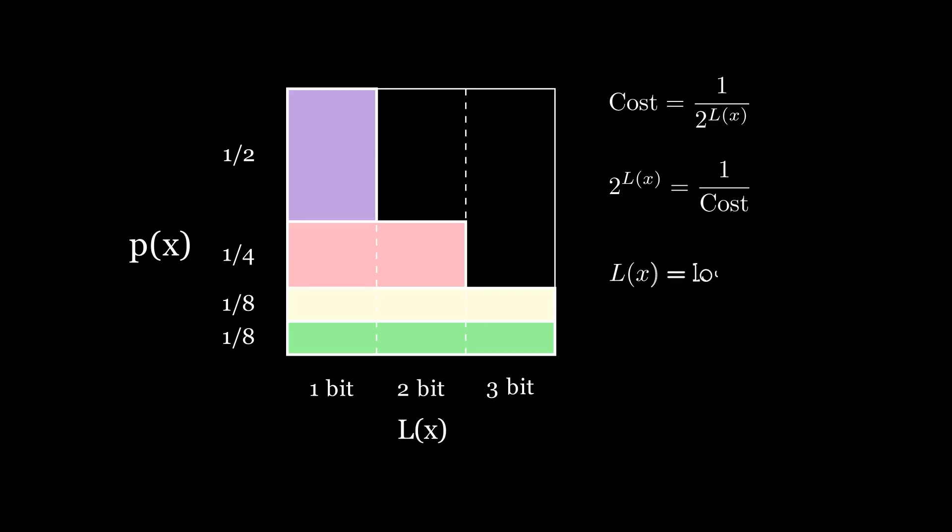Now, going back to the original distribution we started with, we can replace the length with the cost by using what we have learned so far. Using the logarithmic property, we can represent this as such. To understand how cost is equal to px,